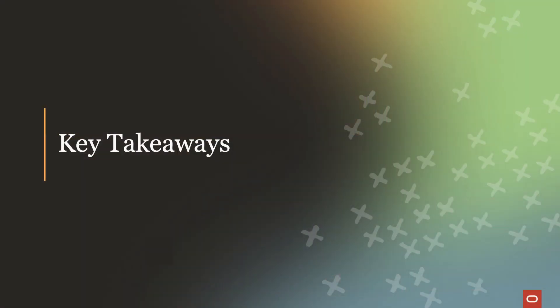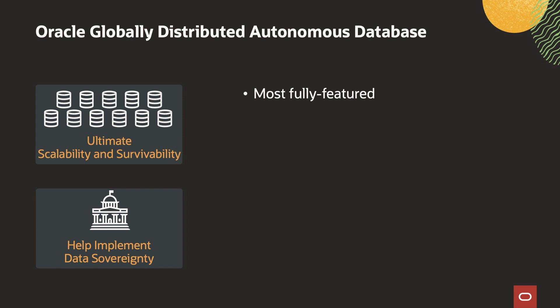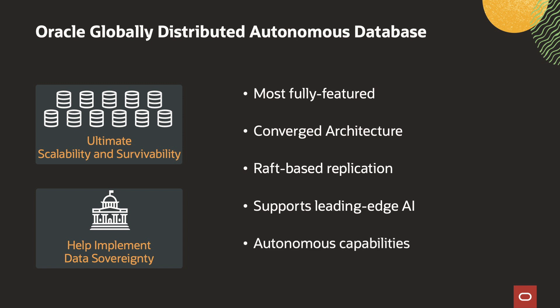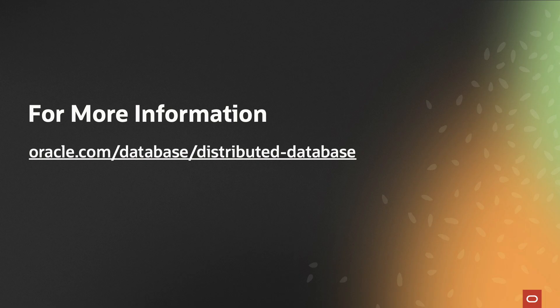Now let's summarize the key takeaways from today's presentation. Oracle Globally Distributed Database is the most fully featured distributed database — it provides more data distribution, replication, and deployment methods than other databases. Its converged architecture simplifies data distribution for apps that use multiple data types and workloads. Raft-based replication will provide ultra-fast quorum-based failover, and it will also support leading-edge AI such as vector search. The autonomous capabilities remove complexity and reduce costs. It provides all the benefits of a distributed database without any of the compromises — so why settle for less? For more information, please go to oracle.com/database/distributed-database. Thanks for joining me today.